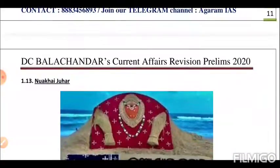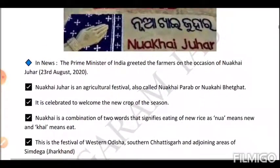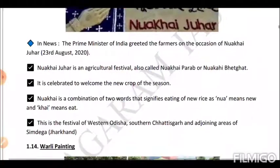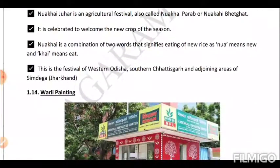Next is Nuakhai Juhar. The Prime Minister greeted farmers on the occasion of Nuakhai Juhar on 23rd August 2020. Nuakhai Juhar is an agricultural festival, also called Nuakhai Parab or Nuakhai Bhetghat, celebrated to welcome the new crop of the season. Nuakhai is a combination of two words: 'Nua' meaning new and 'Khai' meaning eat, signifying the eating of new rice. This is the festival of western Odisha, southern Chhattisgarh, and the adjoining areas of Simdega, Jharkhand.